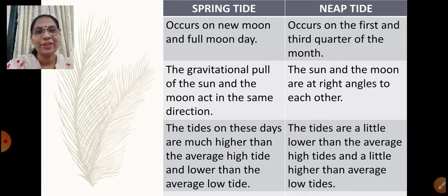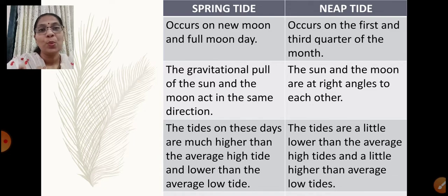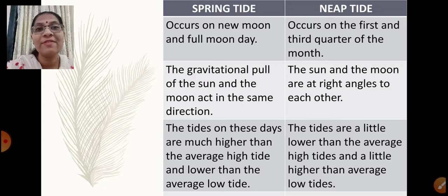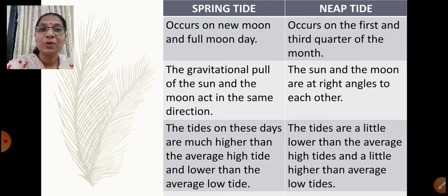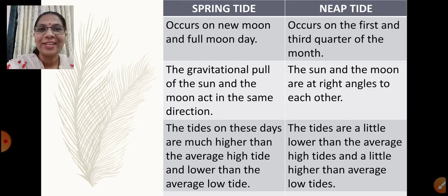Today we have learned about spring tides and neap tides — which days they occur, the position of the sun, the moon, and the earth, the pull of the sun and moon, and how the water level rises and falls during high tide and low tide. We will continue with the third part of this lesson next time. Hope you have understood. Thank you.